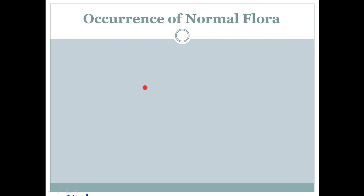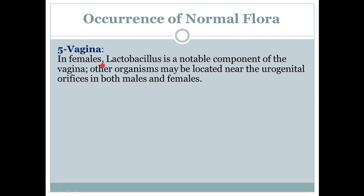Next is the vagina. In females, Lactobacillus is a notable component of the vagina — this microorganism is found in very large numbers. Other organisms may be located near the urogenital orifices in both females and males. The urogenital orifices are the openings of the urinary tract or any opening through which waste exits the body.